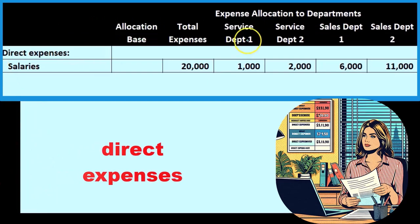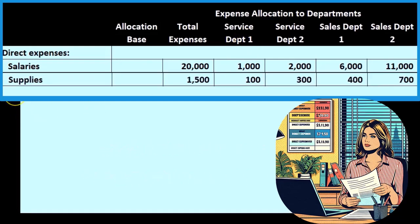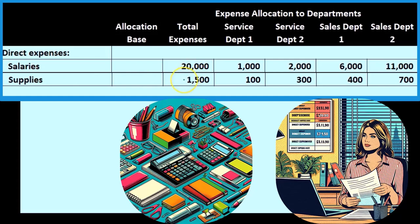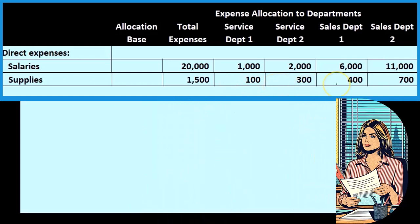We know where direct expenses go because they are direct — the people who earn these salaries work exclusively for these departments, so it is easy to apply salaries to them. Supplies are handled the same way. In this example we have the $1,500 in supplies already broken out by department within our accounting system, making it easy to allocate them as direct expenses.